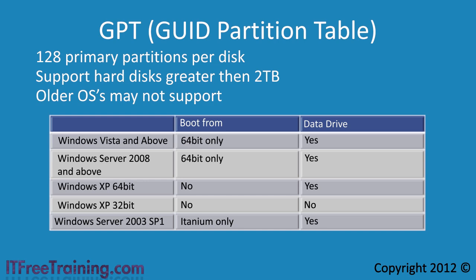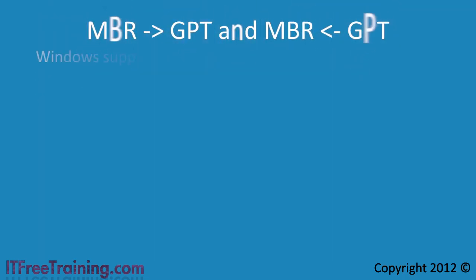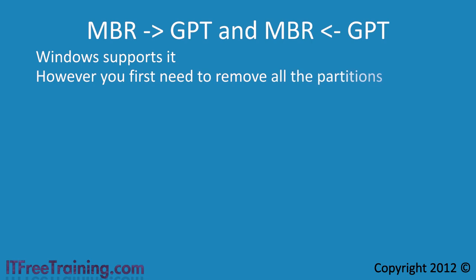When deciding which partition table to use, I would personally select MBR where possible because it will work on every operating system. If you have a hard disk that is close to 2 terabytes or greater, I would select GPT. Some software such as backup software can have problems with hard disks that are close to the 2 terabyte limit using MBR. Windows 7 allows you to convert MBR to GPT and vice versa, but in order to do this you need to remove all volumes and partitions from the hard disk, meaning all data will be lost.